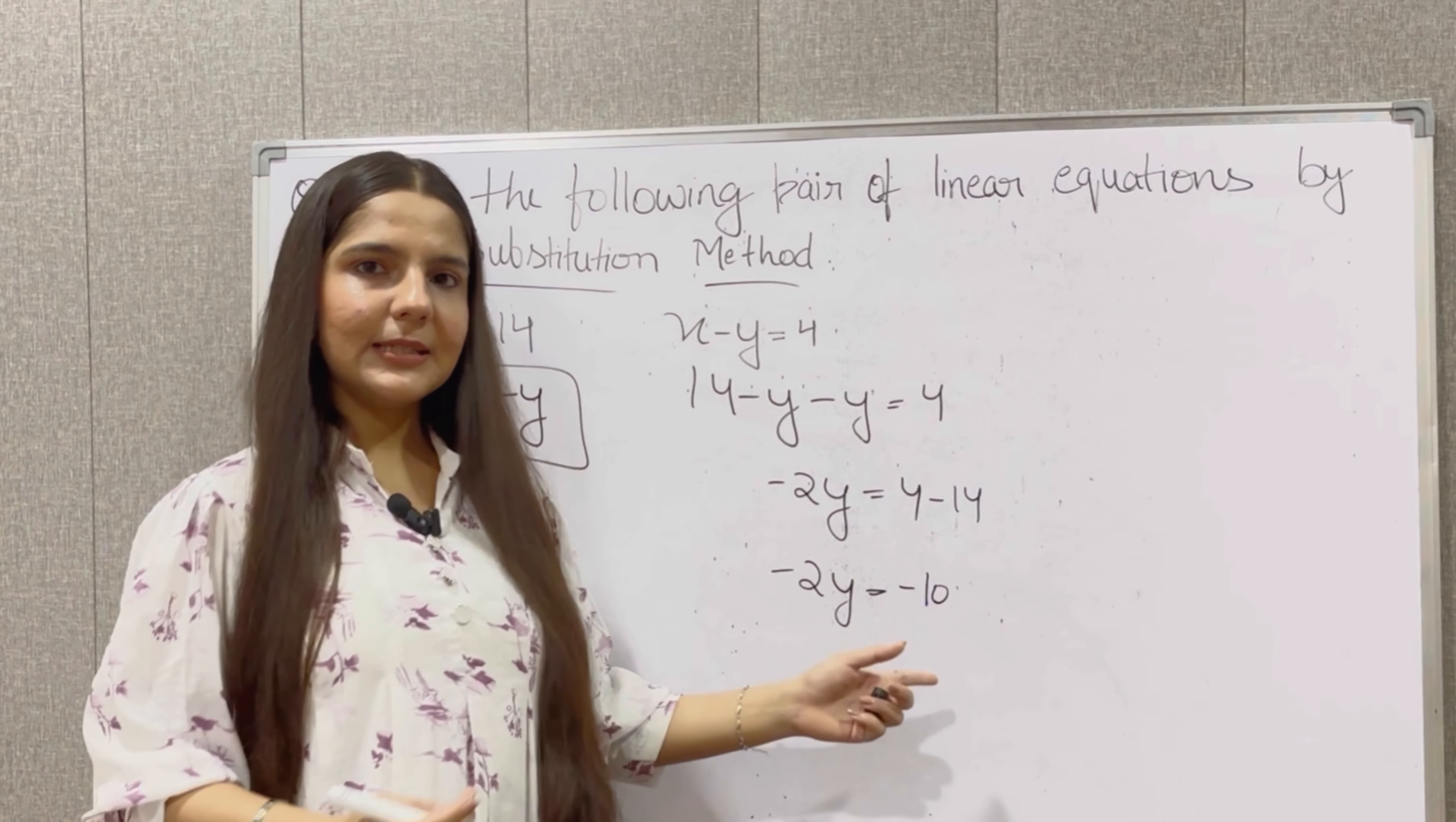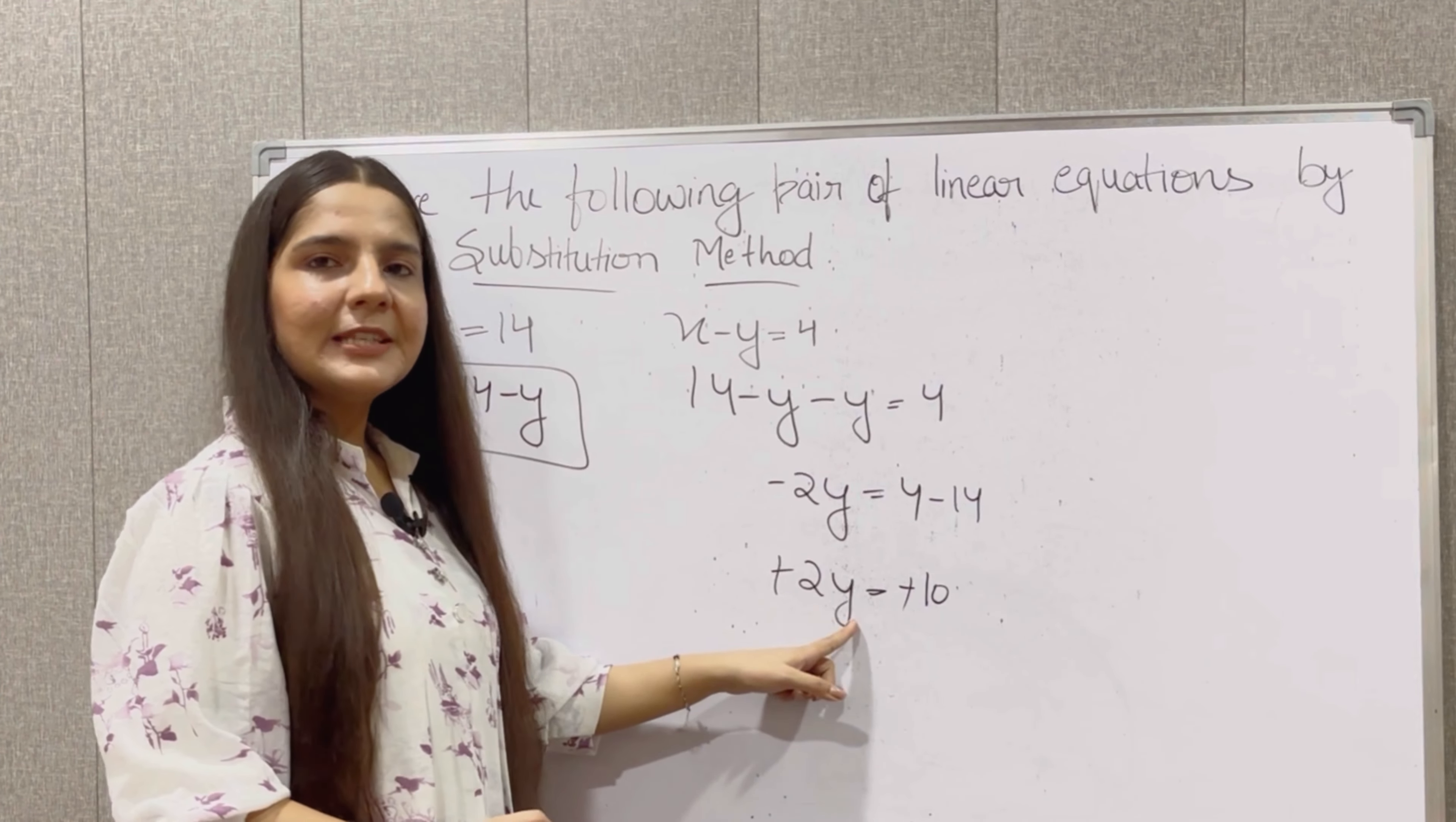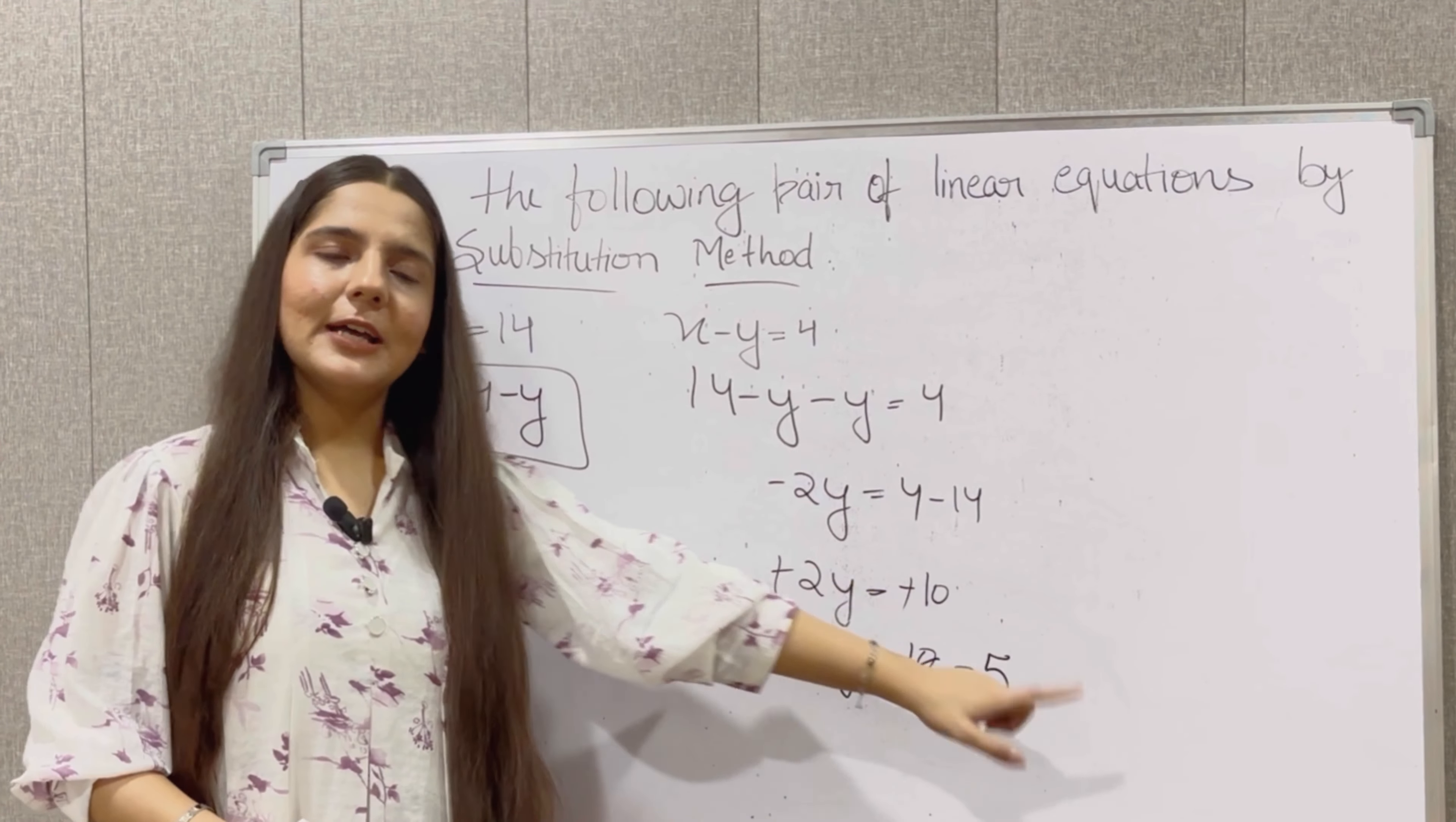So 4 minus 14 is equal to negative 10. Minus 2y is equal to negative 10. Minus will cancel. So y is equal to 10 divided by 2 which gives us 5. So y's value is equal to 5.